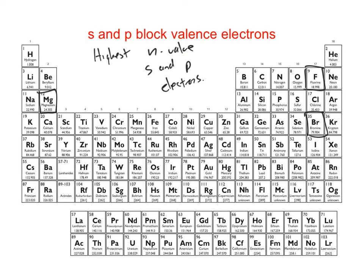If I want to know how many core electrons they have, we just subtract the valence electrons from the total. Going back to fluorine — it had seven valence electrons. Fluorine has nine total electrons, so nine minus seven gives it two core electrons. For iodine, it has 53 total electrons. It's in the same column as fluorine, so it also has seven valence electrons. 53 minus seven means it has 46 core electrons.